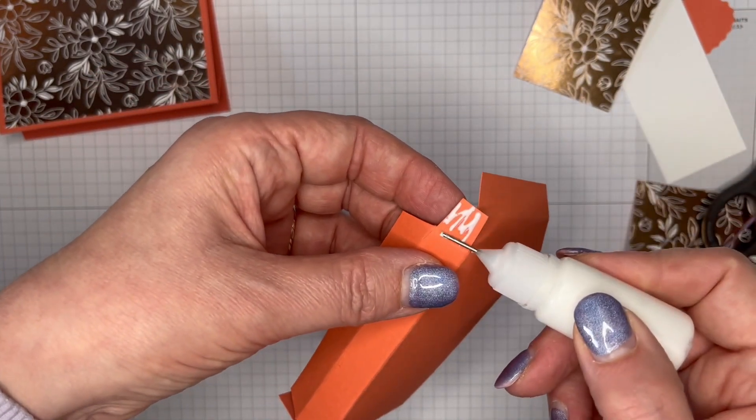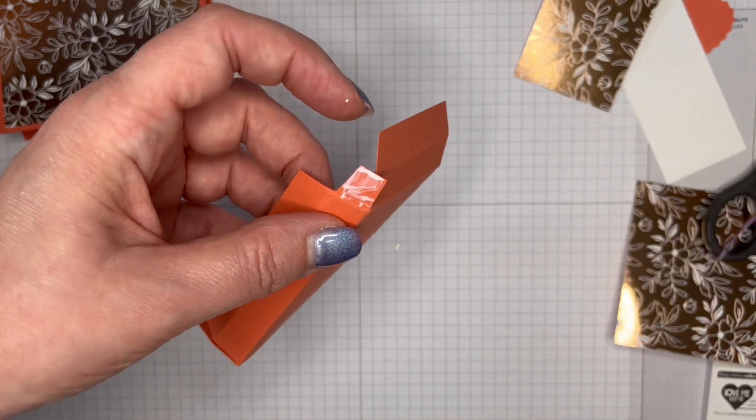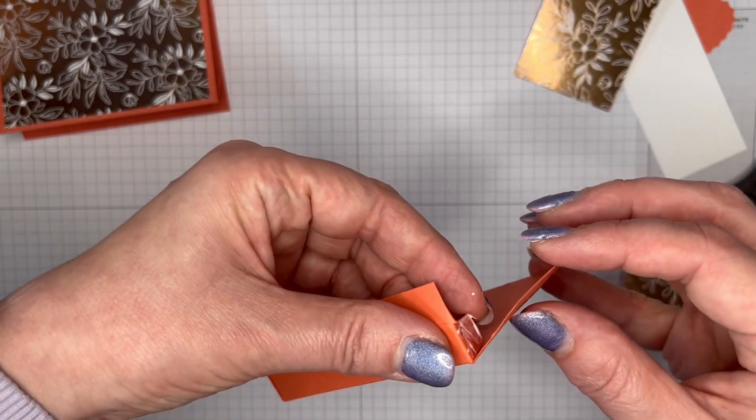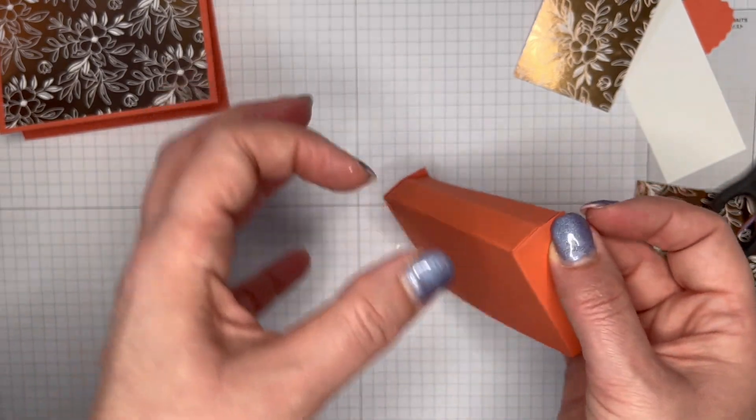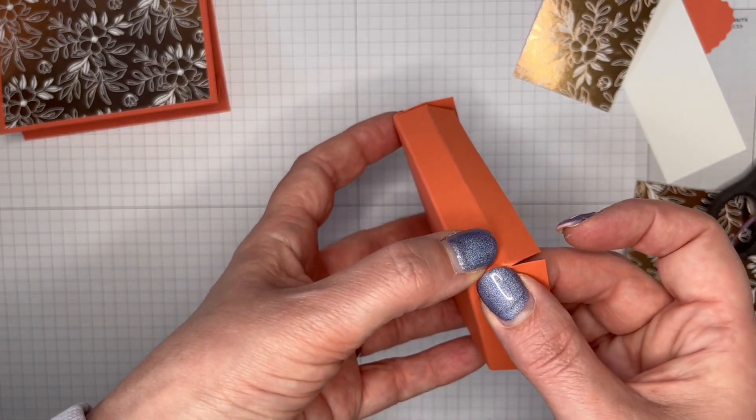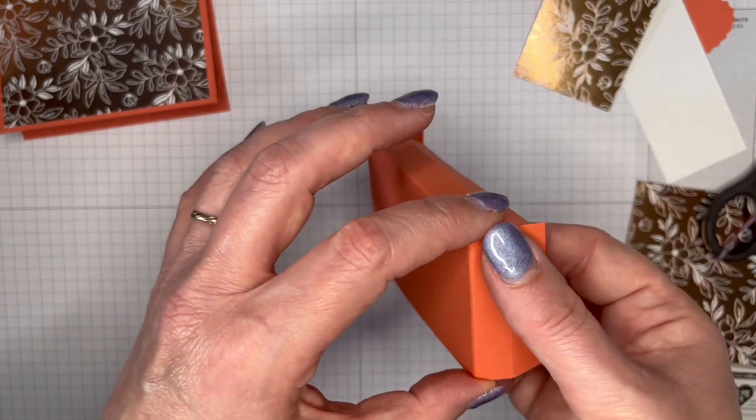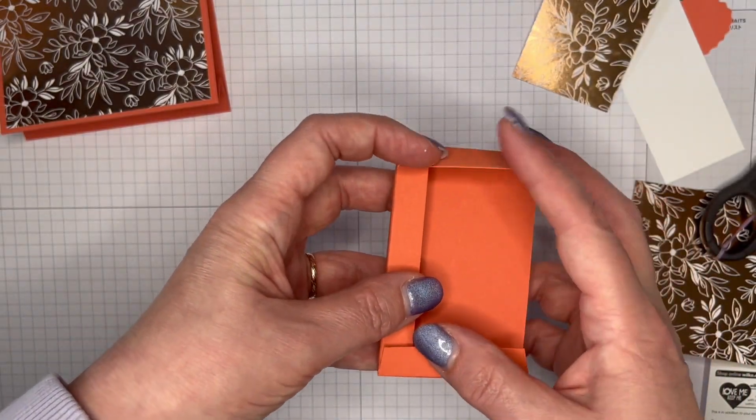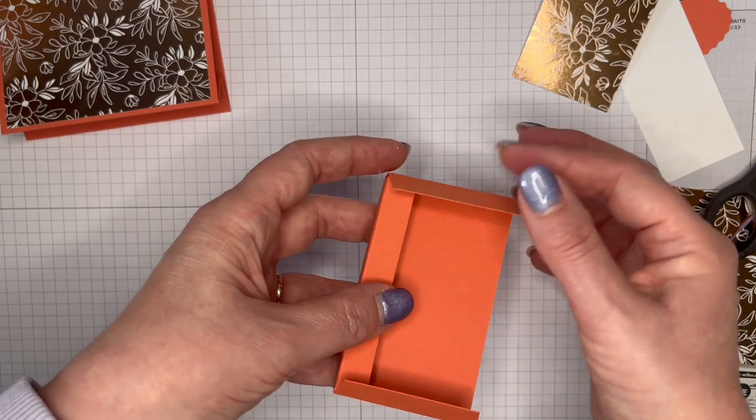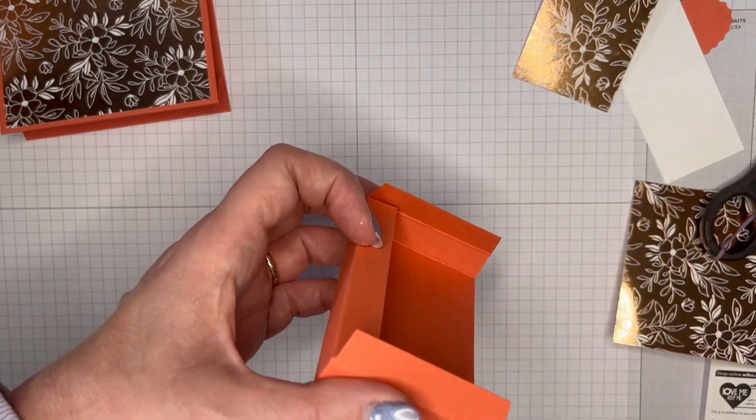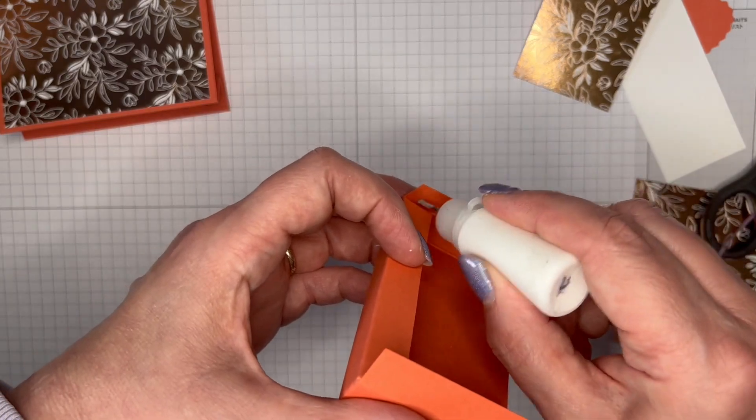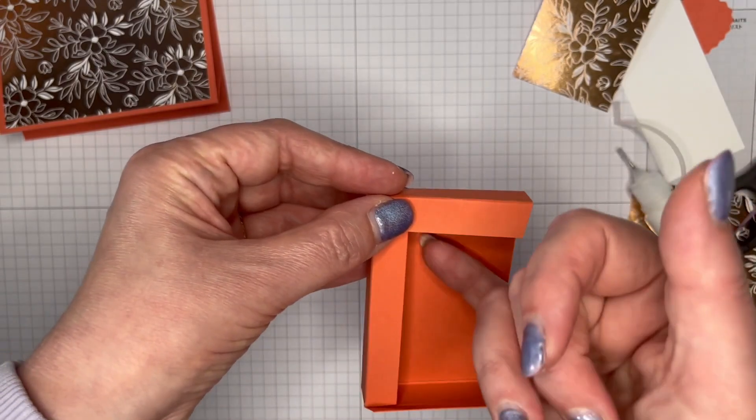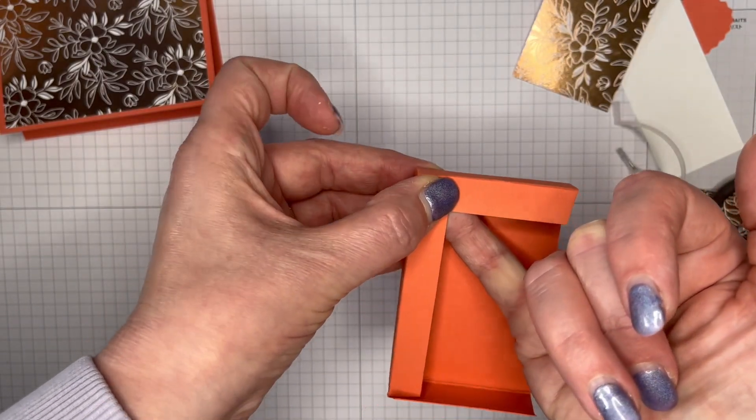Fold that in and fold that up. Press it down and wait until your glue goes off. And then you're going to bring these two bits over and add a little bit of glue in there. And that's just to hold it whilst you put it on to your base.